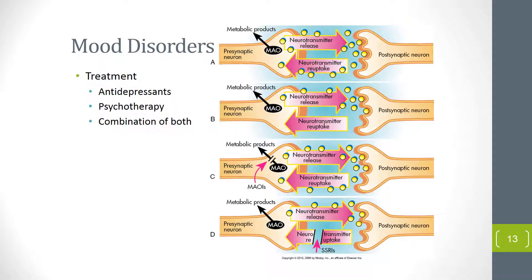The cohort of mood disorders also includes seasonal affective disorder, which is speculated to be related to circadian rhythms. Treatment is similar to depression, though activities mimicking longer daylight duration — such as bright light therapy during winter months — may decrease seasonal affective disorder symptomatology.